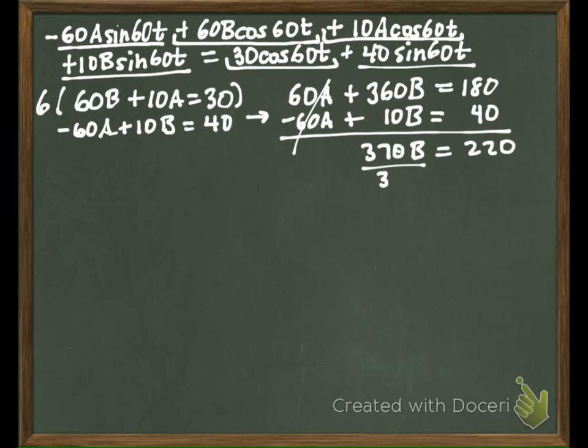So our A's cancel. So we get 370B = 220. So if I divide, these are both reduced by 10. So B is going to be 22 over 37.